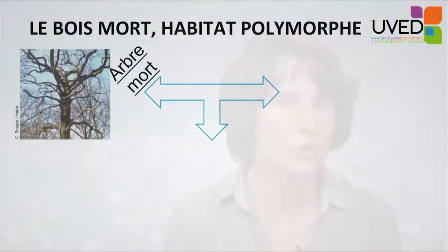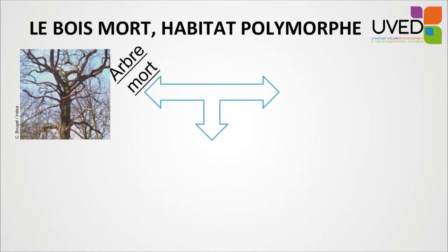Dead wood evolves over time because progressively it will decompose. It is also a polymorphic type of material. It can be found in different forms: either whole dead trees still standing, or pieces of trees lying on the ground — trunks, branches, stumps — and possibly what we call a candle: a standing trunk with no branches left.